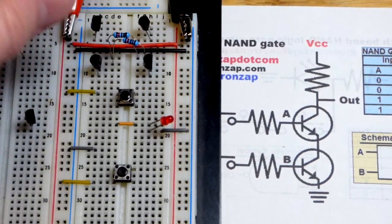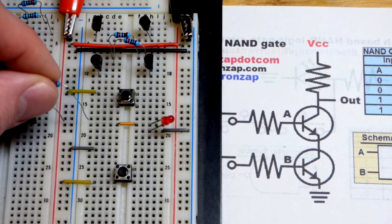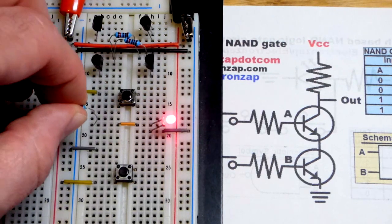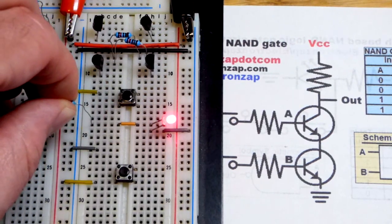So that will be plenty fine. So 220 ohm positive supply to that jumper, and there you can see the LED is on.